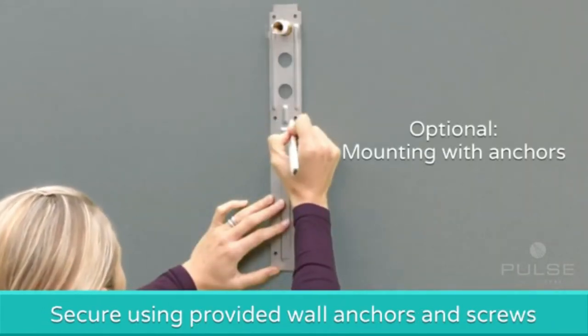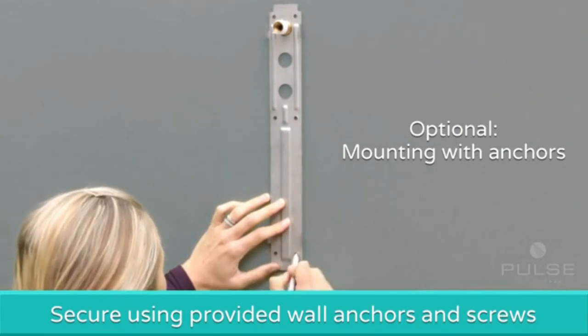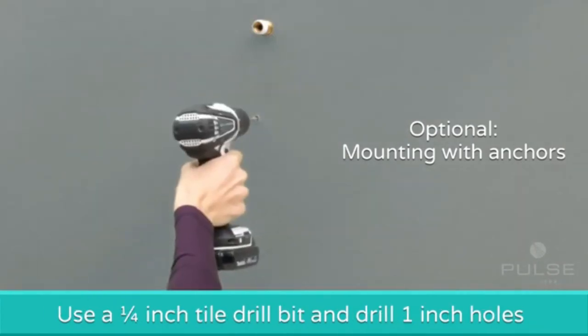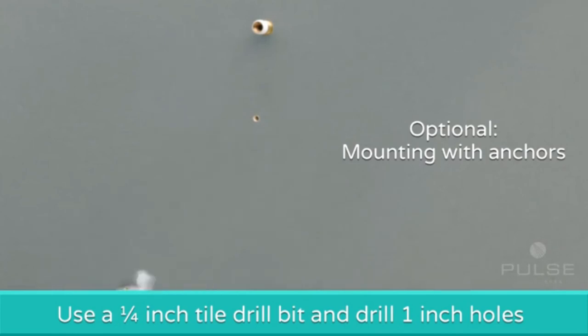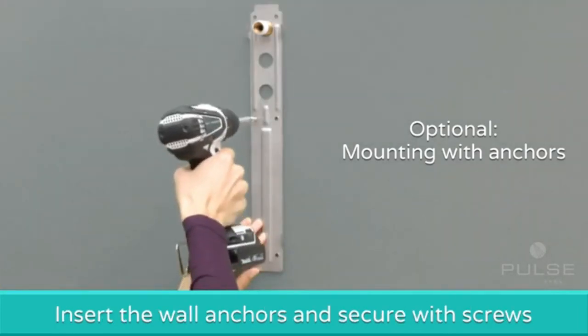As an option, the mounting plate can be secured using the supplied wall anchors and screws. Using a quarter inch tile drill bit, drill one inch holes and insert the anchors. Use the provided screws to fasten into the anchors.